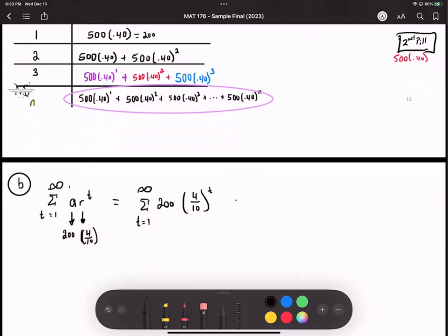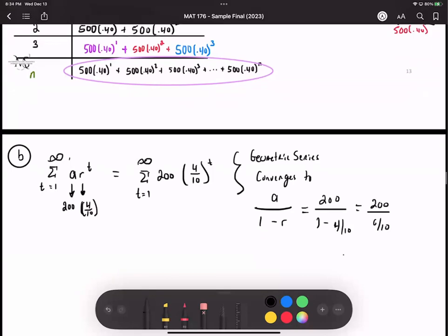Since we know the value of a and r, this geometric series converges to a over 1 minus r. So your a value is 200, your r value is 4 over 10. So 1 minus 4 over 10 is 6 over 10. This gives us 200 over 6 over 10, and then I could do 200 times the reciprocal, so 10 over 6, which would give us 2000 over 6. You can reduce this to basically 1000 over 3, and I believe that will be your answer.